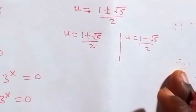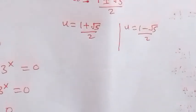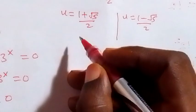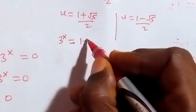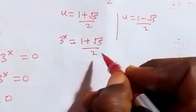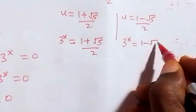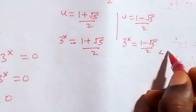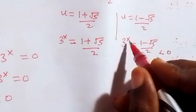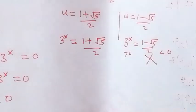We represented u as 3 raised to power x — we said let u be 3 raised to power x. Bringing 3 raised to power x to each case: 3 raised to power x equals (1 plus root 5) over 2, and on the other side 3 raised to power x equals (1 minus root 5) over 2. This second value gives a negative number — less than zero — so that cannot work, since 3^x is always greater than zero. Therefore no solution from that case.